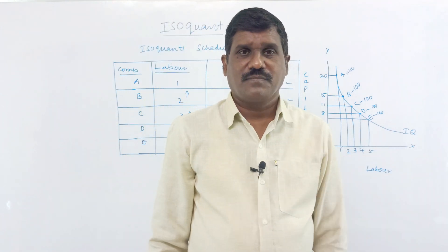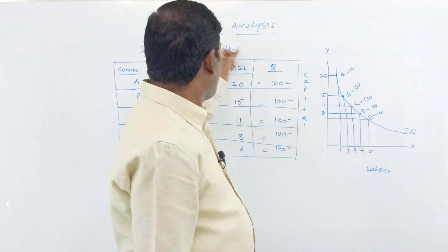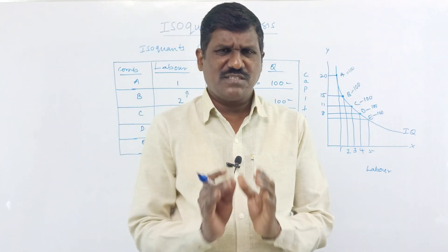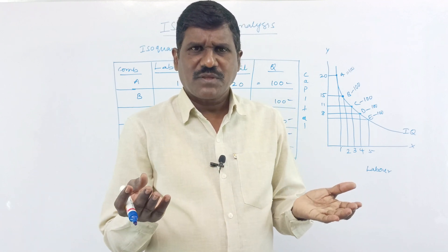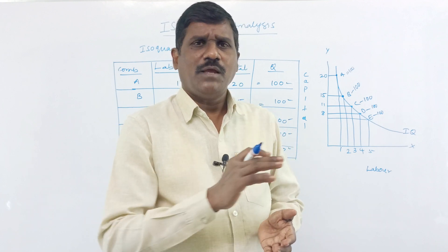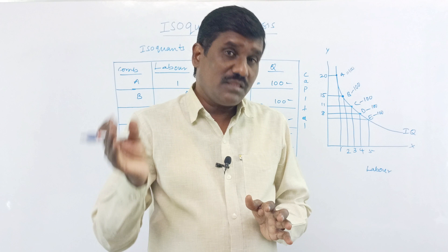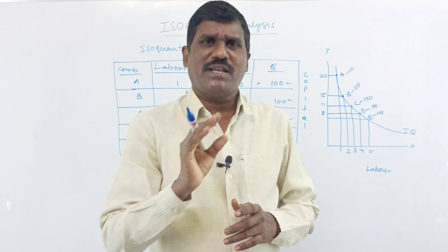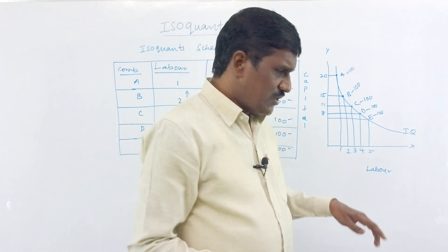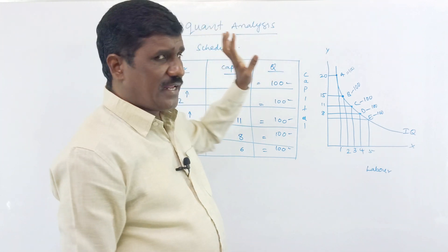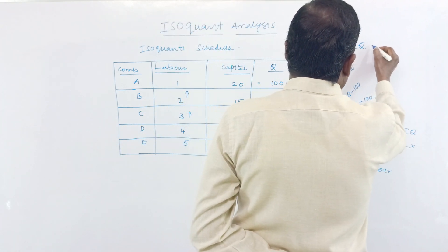Students, this is the presentation of isoquants analysis. There is just one difference between indifference curve analysis and isoquants: in indifference curve analysis, the equilibrium of the consumer is analyzed — the consumer is the main character. Here in isoquants analysis, the equilibrium of the producer is analyzed — the producer is the main character. The remaining diagram and concepts are the same. This is our presentation of isoquants analysis: one is the table — the isoquants schedule — and here is the diagram.